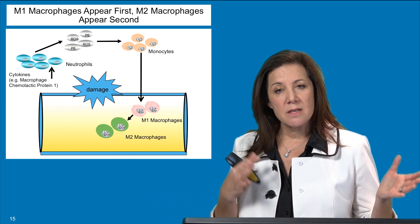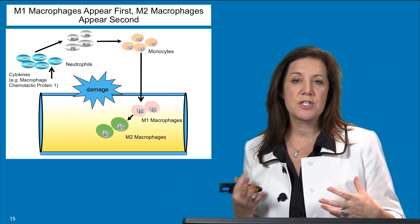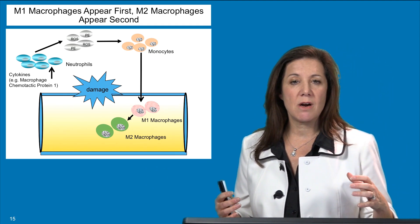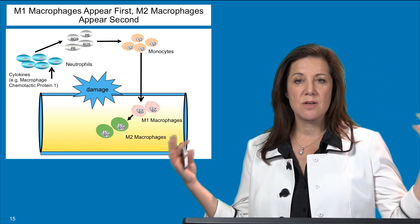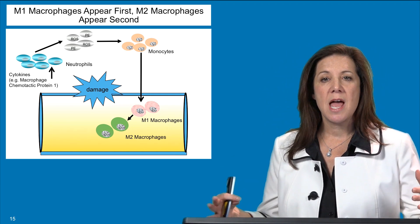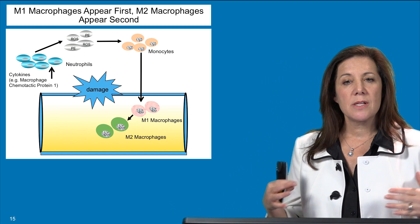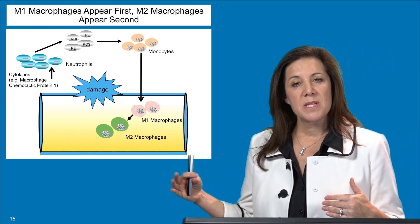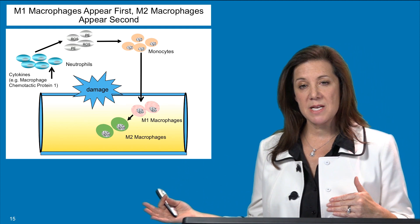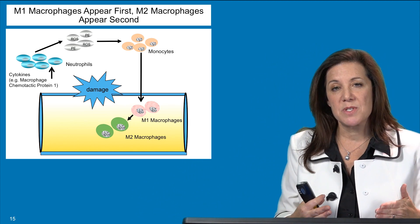Eventually these macrophages become a different type: M2 macrophages. This represents a juncture in the process of inflammation and muscle repair. The earlier stages are about ramping up the immune response and degrading dead tissue; now we want to ramp it down and start repairing muscle. In early stages you see M1 macrophages; then M2 macrophages appear. Whether M1 macrophages change their phenotype to M2s, or whether resident macrophages proliferate and become M2s, remains a mystery in the field.